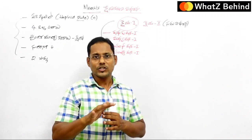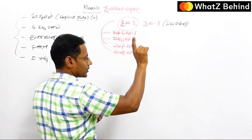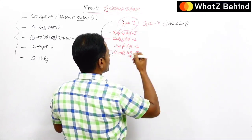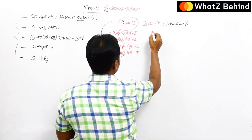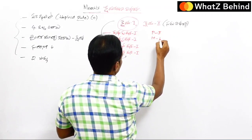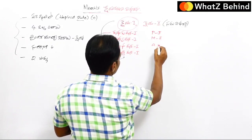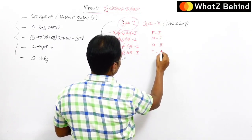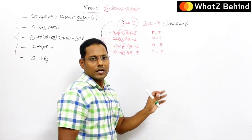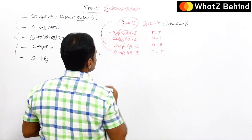In kshaykarana vibajana I, the nucleus divides and the chromosome number is halved. Then in kshaykarana vibajana II, similarly there is Prophase II, Metaphase II, Anaphase II, and Telophase II — the same four phases repeat in the second division.